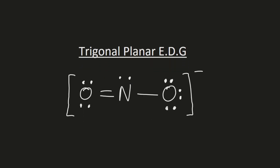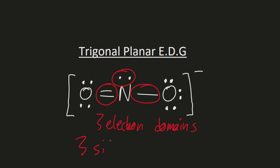If there are three electron domains around the central atom, the electron domain geometry is called trigonal planar. For example, NO2- has three electron domains around the central nitrogen atom, so it has a trigonal planar electron domain geometry. You can remember this because there are three electron domains and there are three sides in a triangle, and you see how the beginnings of these two words match.